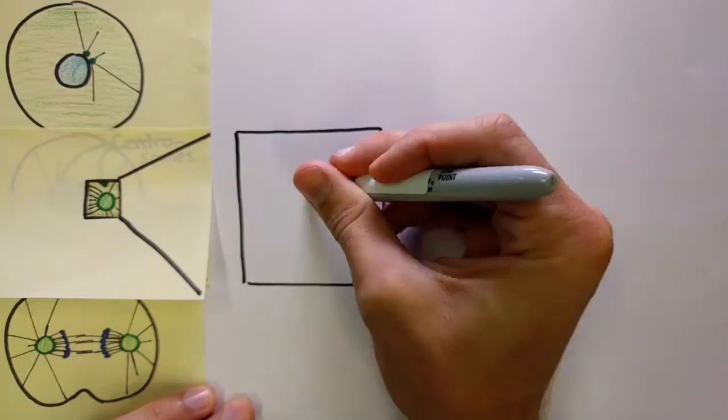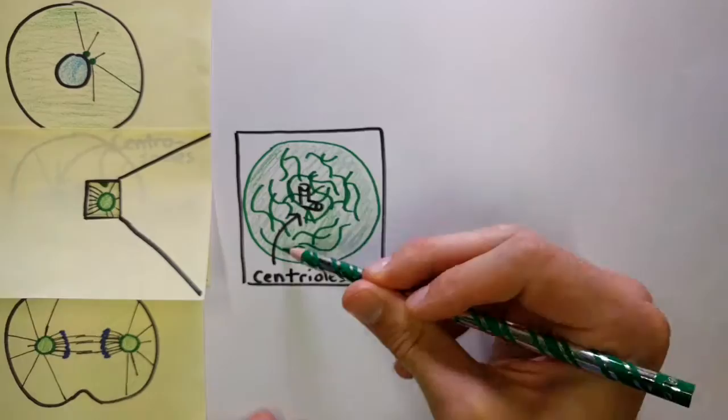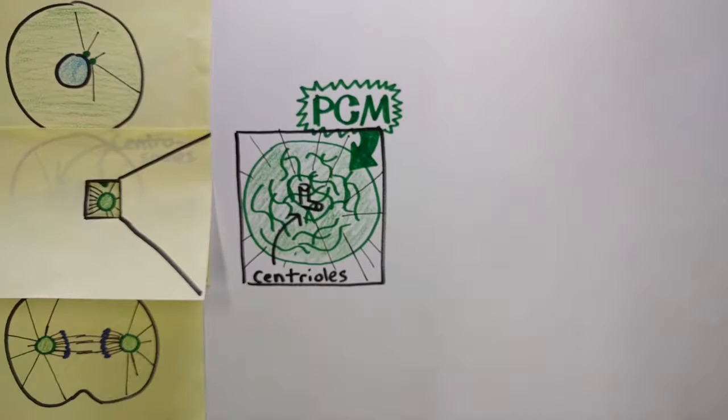Centrosomes consist of a pair of centrioles surrounded by a protein matrix called pericentriolar material, or PCM. In order to organize the huge number of microtubules in the spindle, centrosomes grow around 50 times in size prior to cell division.